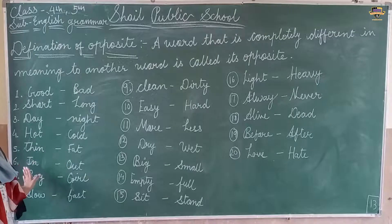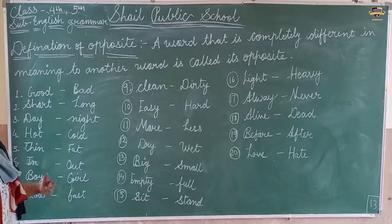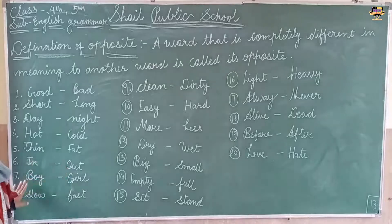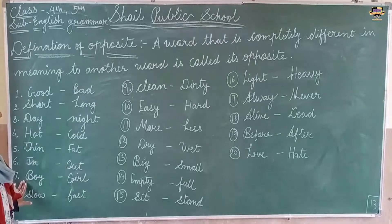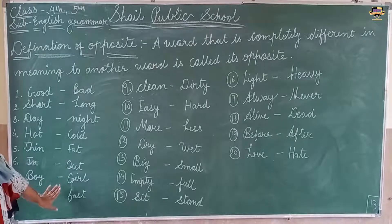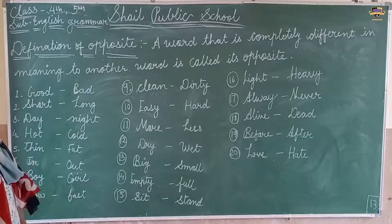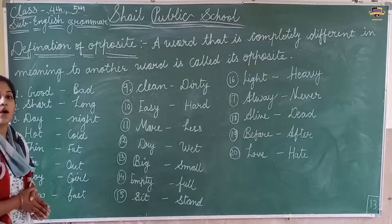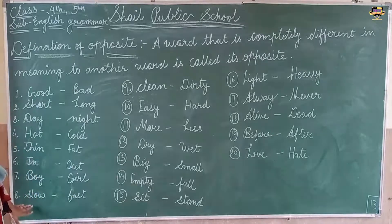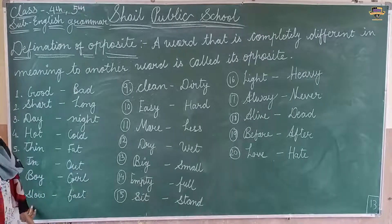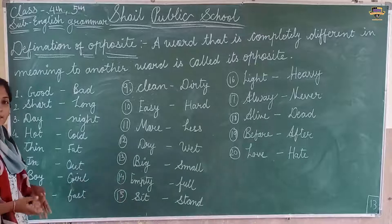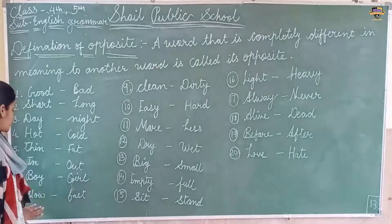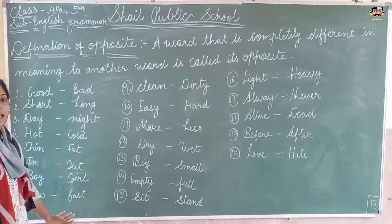Out — opposite word is In. Boy — opposite word is Girl. Slow — opposite word is Fast.